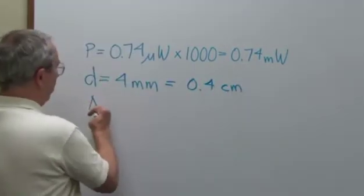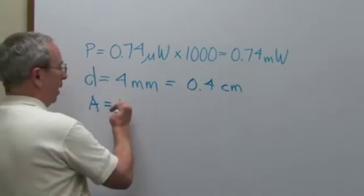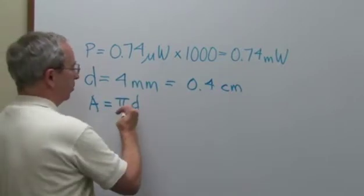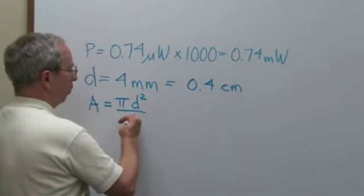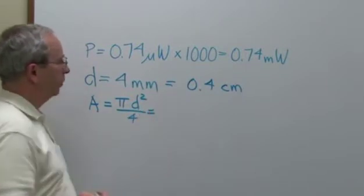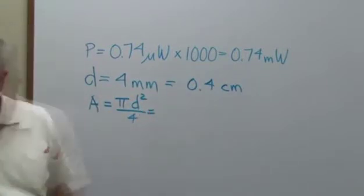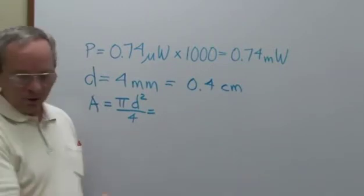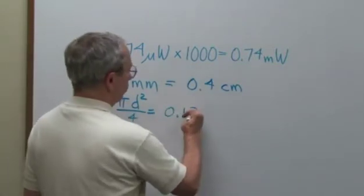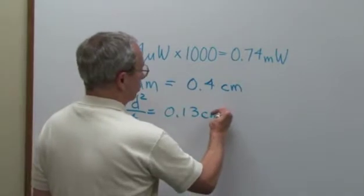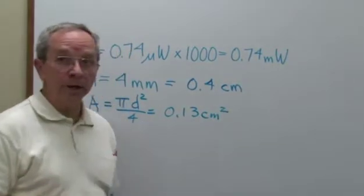Now our area calculation is going to be pi times that diameter squared divided by 4. So if we put that number into our calculator and we'll round it to two significant digits, we'll get 0.13 centimeters squared for our laser beam.